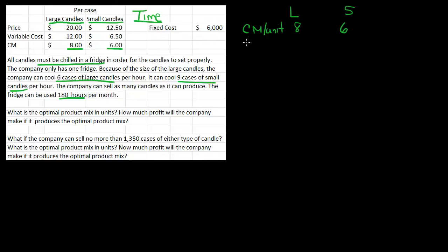Now, how many cases of candles can I make per hour? So let's see, cases per hour. Well I can make six cases of large or nine cases of small. Remember I can't do both. I can only do one or the other.